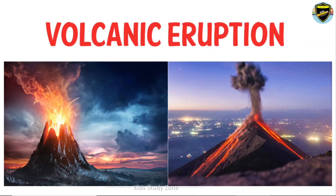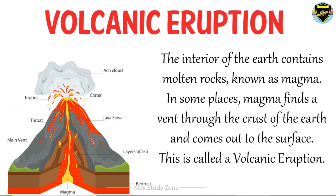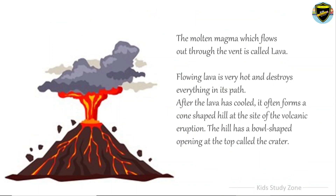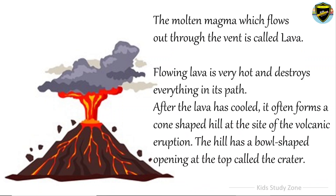Next is volcanic eruption. The interior of the earth contains molten rocks known as magma. In some places, magma finds a vent through the crust of the earth and comes out to the surface. This is called a volcanic eruption. The molten magma which flows out through the vent is called lava. Flowing lava is very hot and destroys everything in its path. After the lava has cooled, it often forms a cone-shaped hill at the site of the volcanic eruption. The hill has a bowl-shaped opening at the top called the crater.